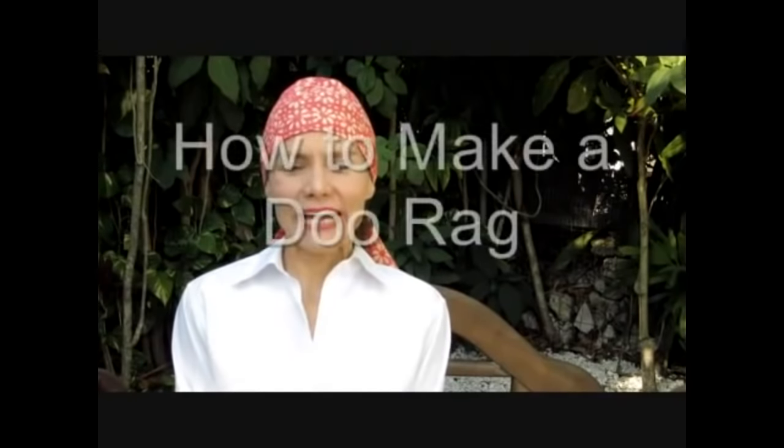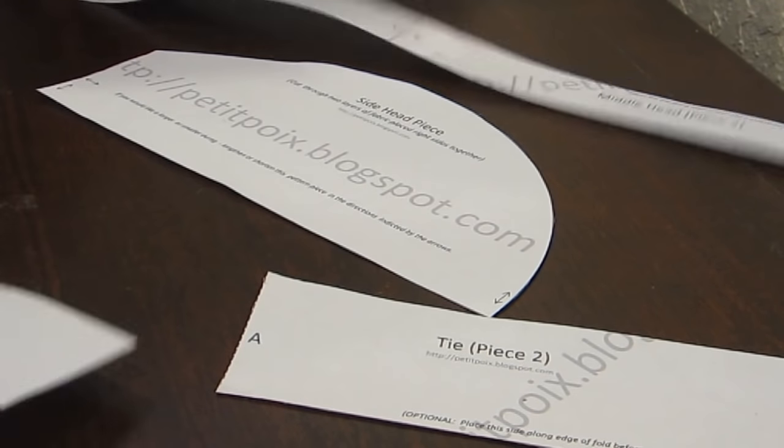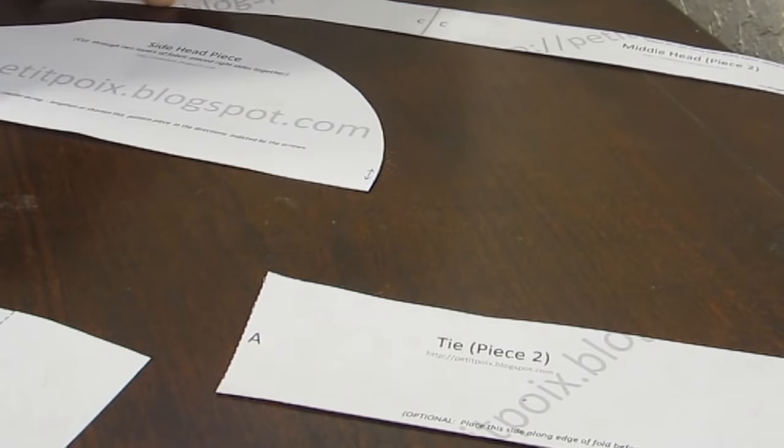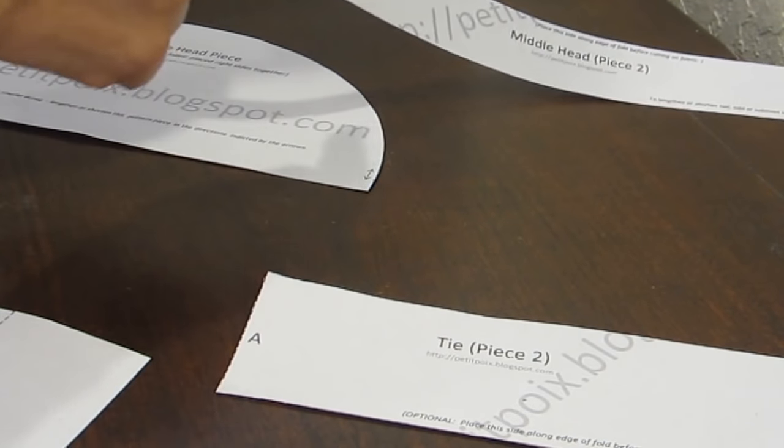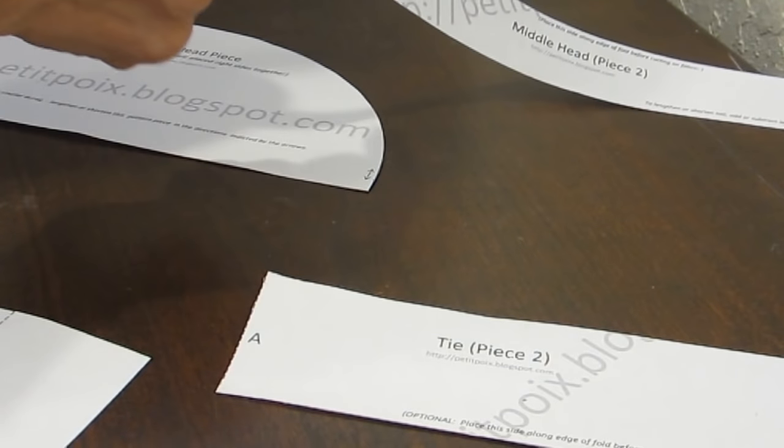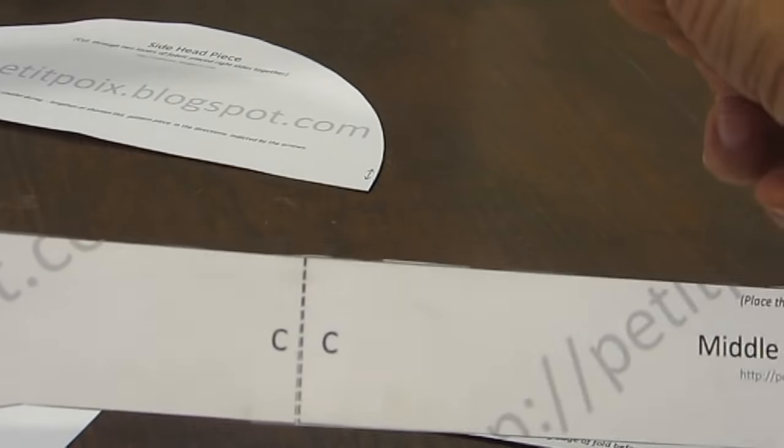Hi there! Today we're going to learn how to make a do-rag. What you've done then is you cut out all the pieces along the solid lines and now you tape the pieces together where the letters correspond. For example, like I did on this one here.